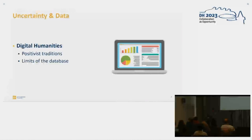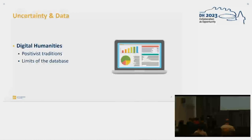If you look at the limits of the database, for example — and a database is also something that we're using — you have those very clear-cut things, unambiguous enumerations, where you need clear labels and definite data values, because everything else is simply not in the data set. And so the uncertainty we're presented with in the humanities might cause friction. In this talk, we'll talk about those moments where friction arises and which decisions we have made when dealing with this uncertainty.